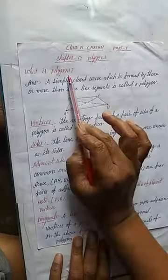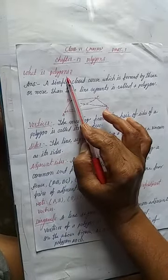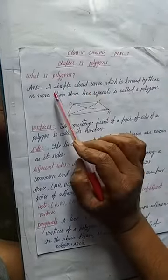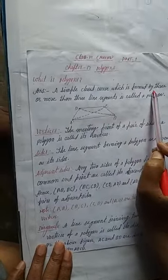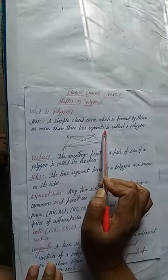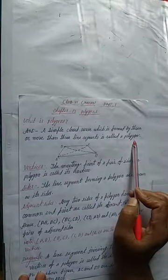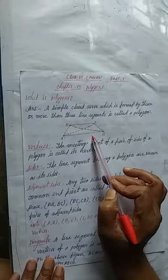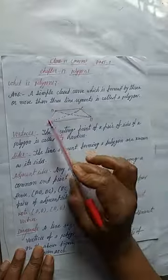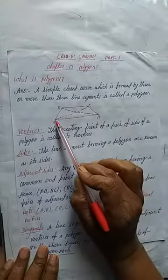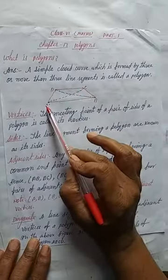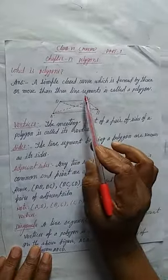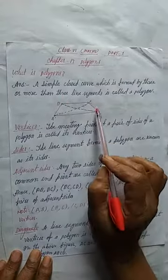So what is a polygon? A simple closed curve which is formed by 3 or more than 3 line segments is called a polygon. So here, how many line segments are in this figure? Here are 4 line segments: AB, BC, CD, and DA. So here are more than 3, so this is a polygon.